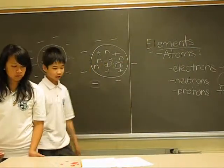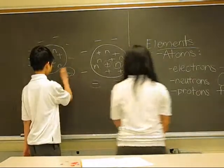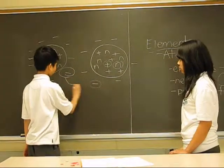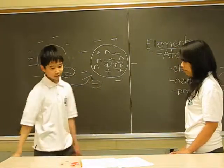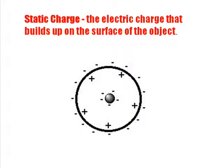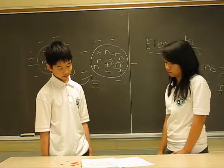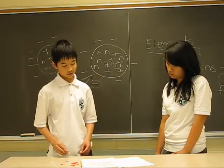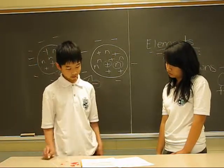So objects become charged when electrons move from one object to another. The electric charge that builds up on the surface of the object is called a static charge, or static electricity. This occurs because electrons remain very fixed in one location until given a path to escape.